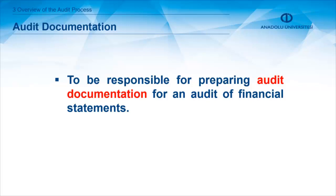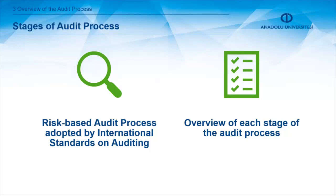Audit documentation — these are the working papers that, as an auditor, you are responsible for preparing. This is audit documentation, also called an audit file or working papers. ISA 230 specifically addresses audit documentation because these are legal documents. Working papers are prepared by the auditor in written form, and the auditor is responsible for them for at least 10 years. This is a really important part of the audit.